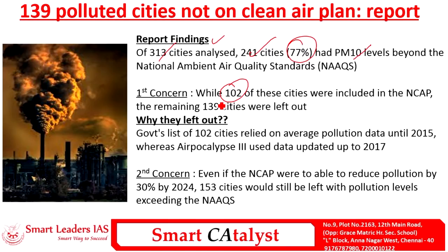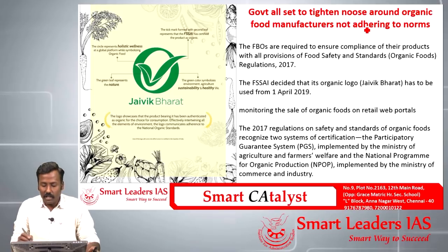The report raises the concern that even if the government reduces PM particulate matter pollution by 20 to 30% by 2024, around 153 cities will still be lurking at dangerous levels. The government has taken a right step forward by implementing NCAP in 102 cities, but must think about possible repercussions of missing out the remaining cities. Up-to-date data should be used in order to choose the cities to implement NCAP.